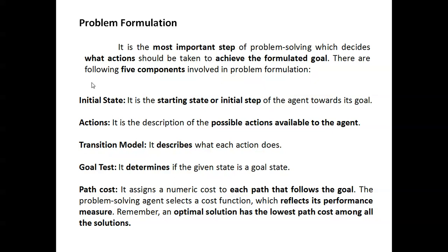So in problem formulation, there are five states: initial state, action, transition model, goal test, and cost. That final cost — for achieving the goal state — may be measured in money, steps, time, or whatever. It should be optimal: less money, less time, less steps, like that.